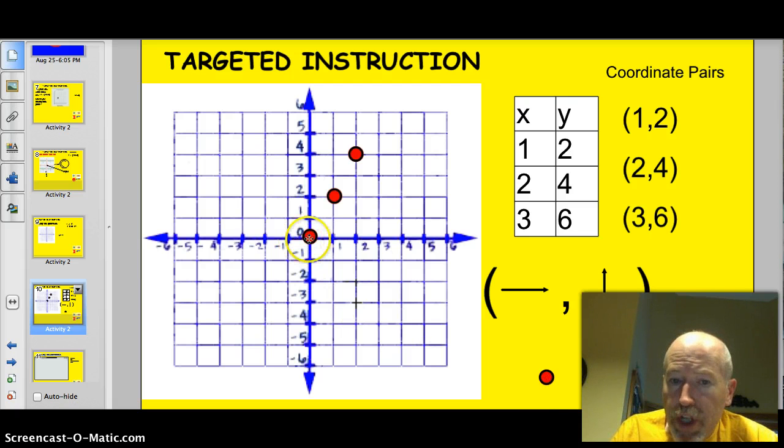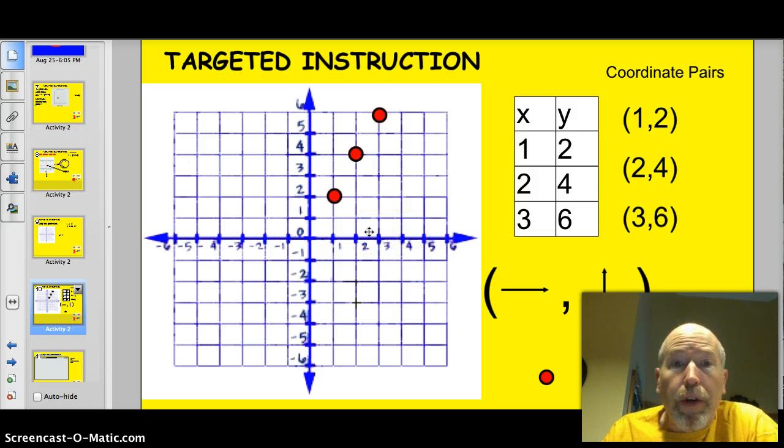And the same thing with the last point. Go to the origin. Always start at the origin. This time, I have to go (3,6). So 3, 6. Over 3, up to 6. And that's how you plot points. That's how you plot coordinate pairs. You got your x and your y value, just like we did in the last chapter 1 with function tables.